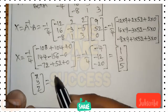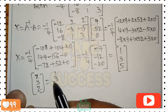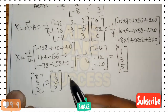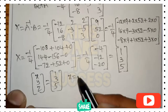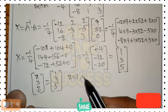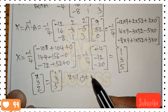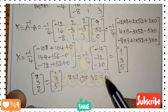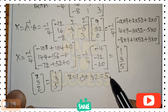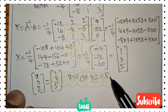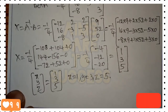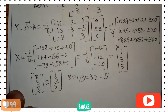Equating both matrices, capital X = [x / y / z] = [1 / 3 / 5], giving us x = 1, y = 3, and z = 5 as the required answer. I hope you understand, my dear students. Please subscribe to our channel, support us, and share with your friends.